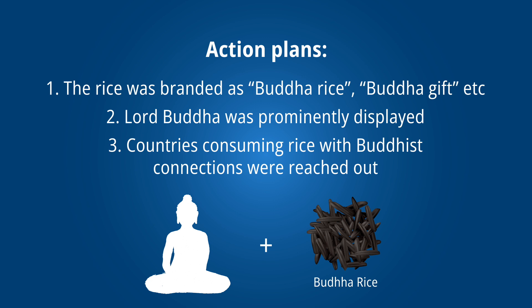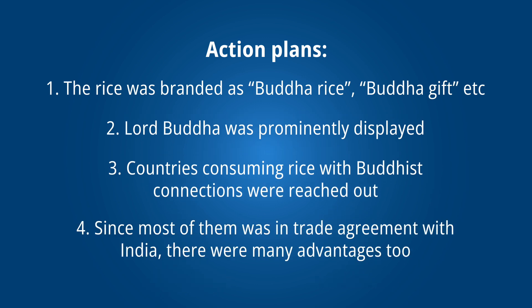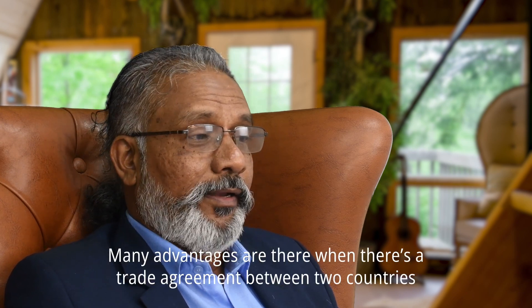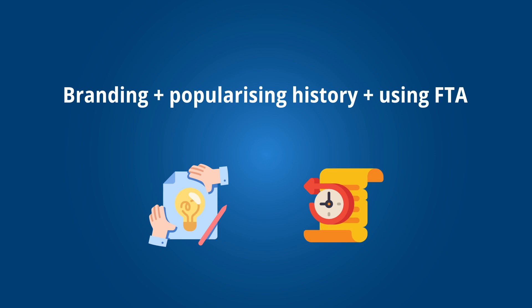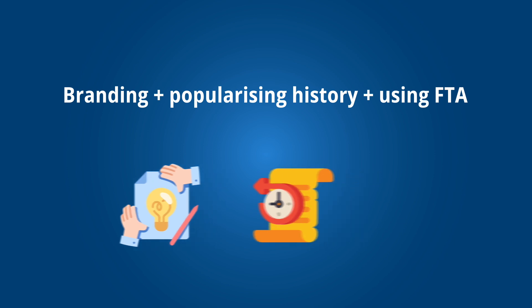When they reached out, there was an obvious personal and emotional connection — people who respect Lord Buddha so much, knowing he consumed this rice to break his fast, were naturally drawn to it. Since most of these countries also had a trade agreement with India, many advantages came into play: clear systems, clear tariffs, and multiple other benefits from signing trade agreements between two countries. This is what I call a clever combination of branding, history, and leveraging FTAs to the positive advantage of both countries.